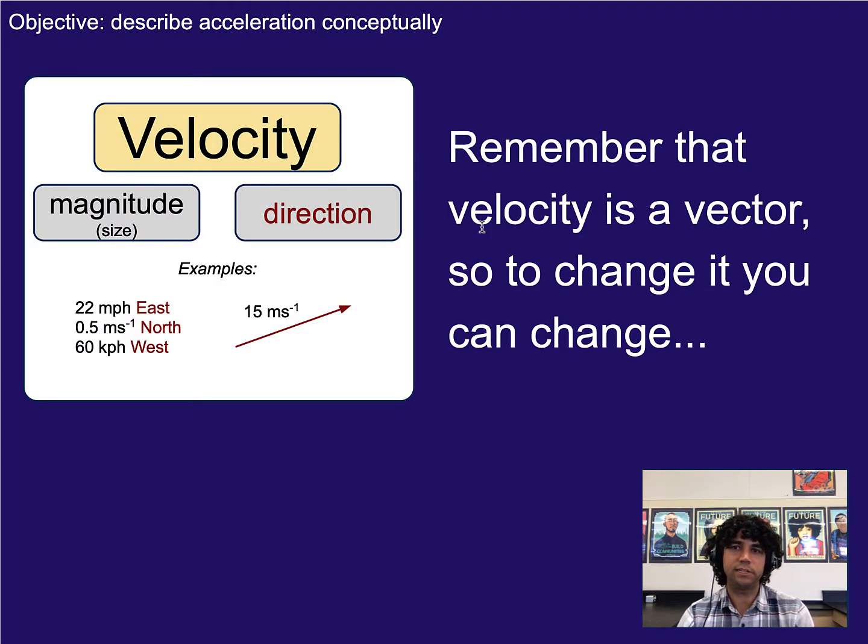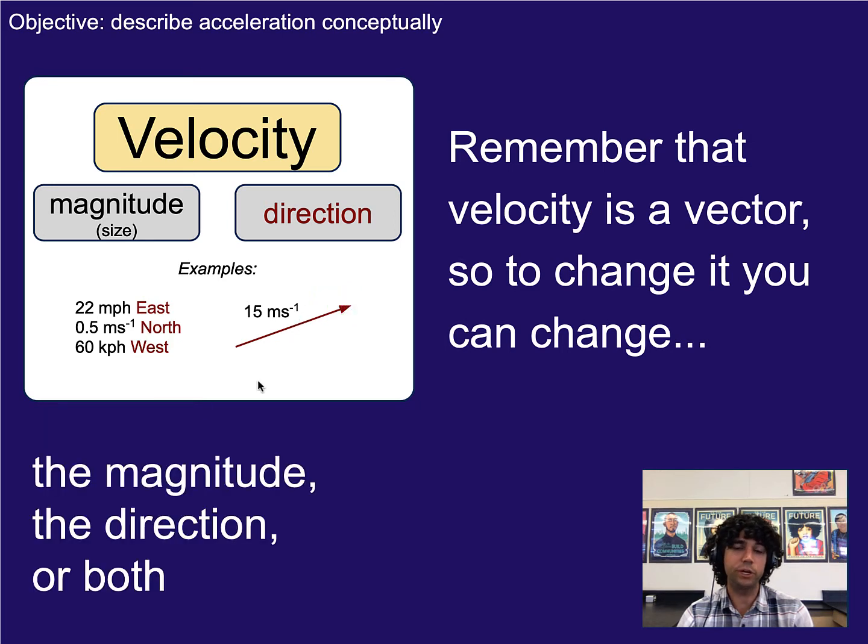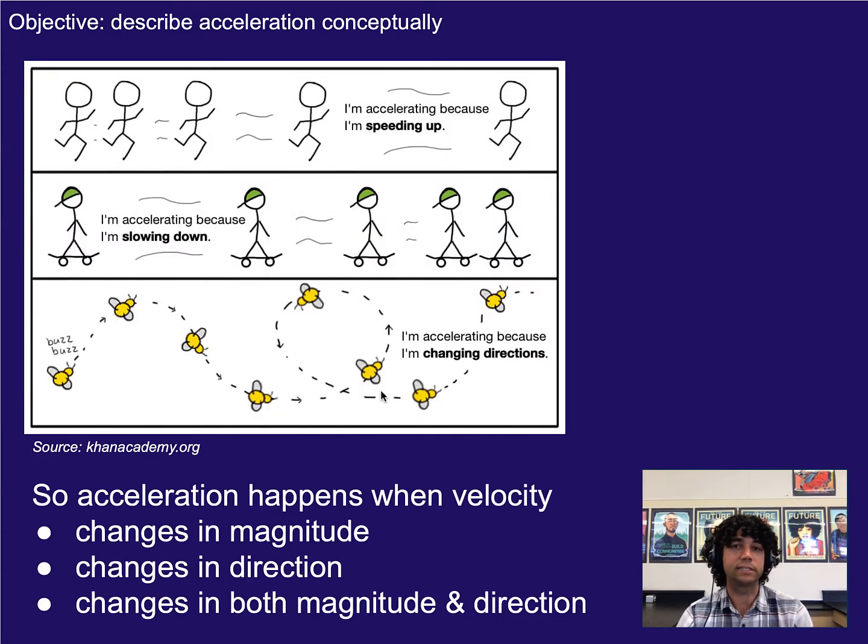Remember that velocity is a vector, so that means to change it we can do one of two things. We can change the magnitude, that would be the size or number of it, or we could change the direction, that would be the north, south, east, west, or literally just pointing in a direction. We could also change both. So doing either or both of those things, changing the number or the direction, technically changes the velocity. Therefore, if we're doing either of those things or both, we are technically accelerating.